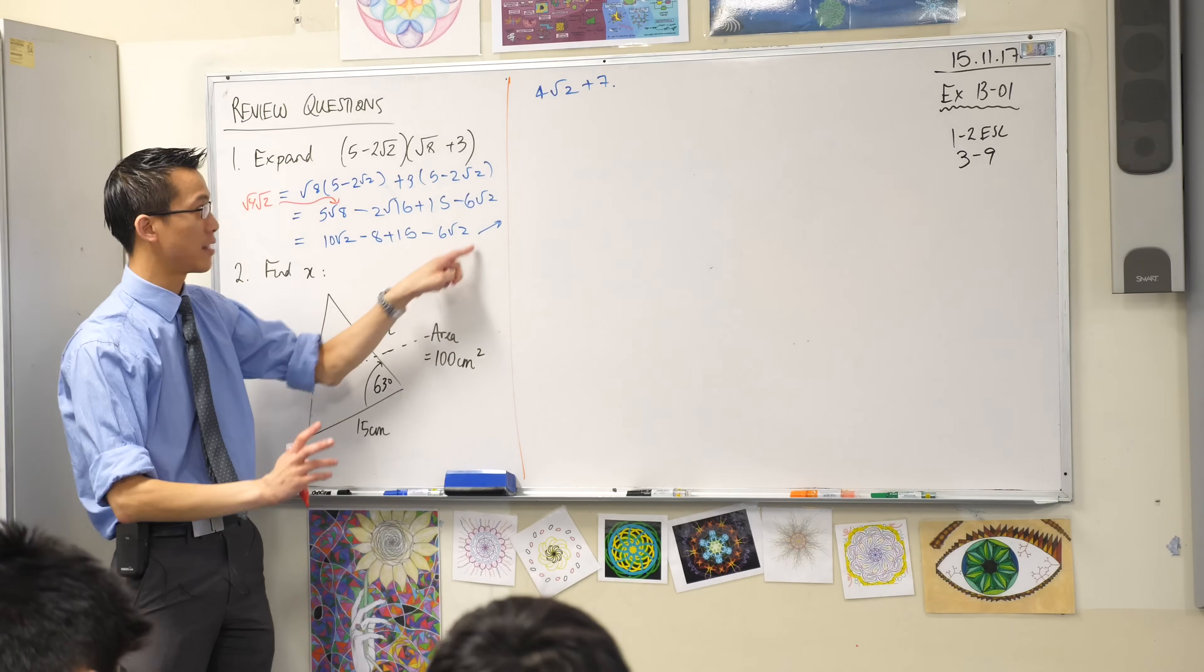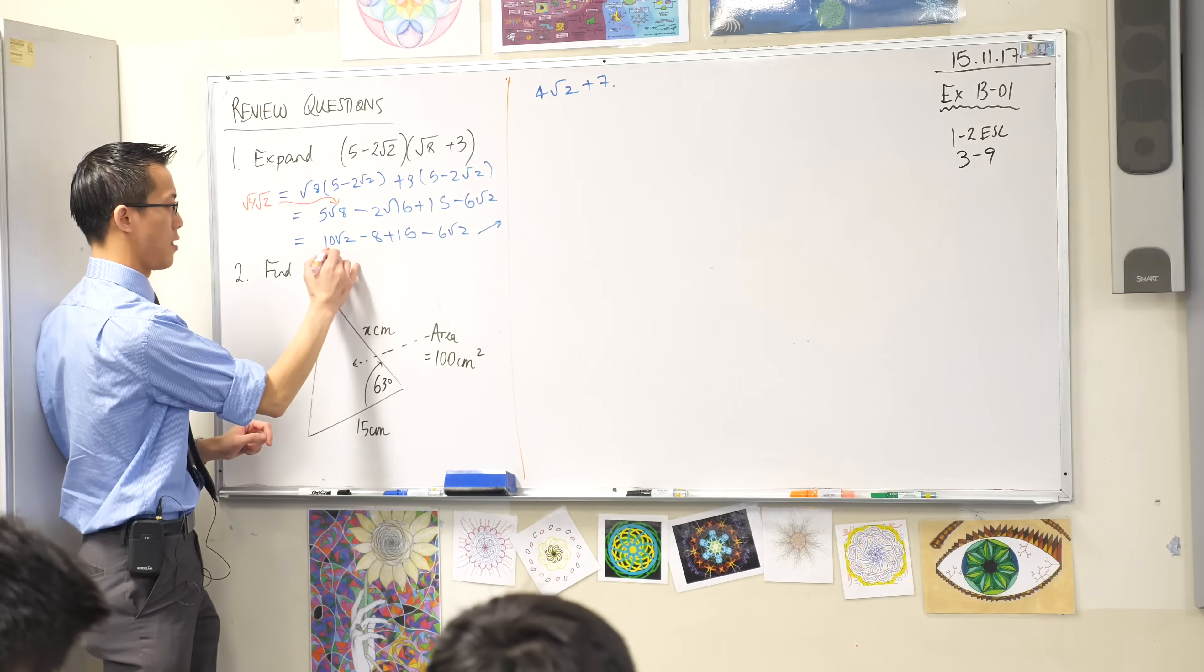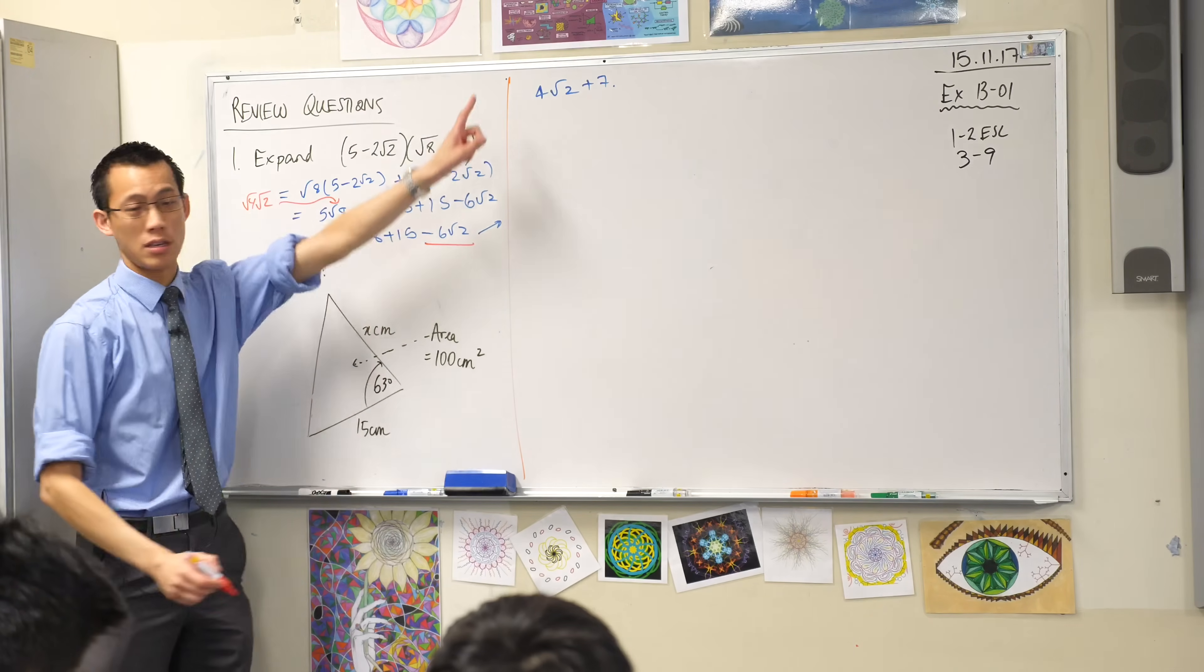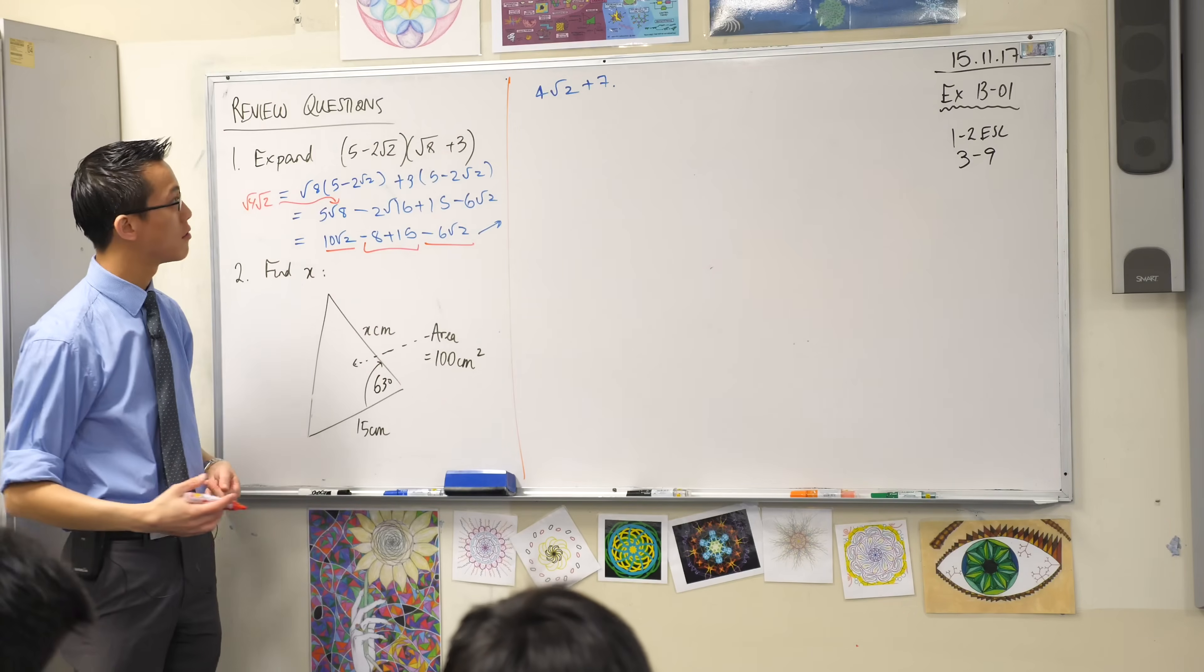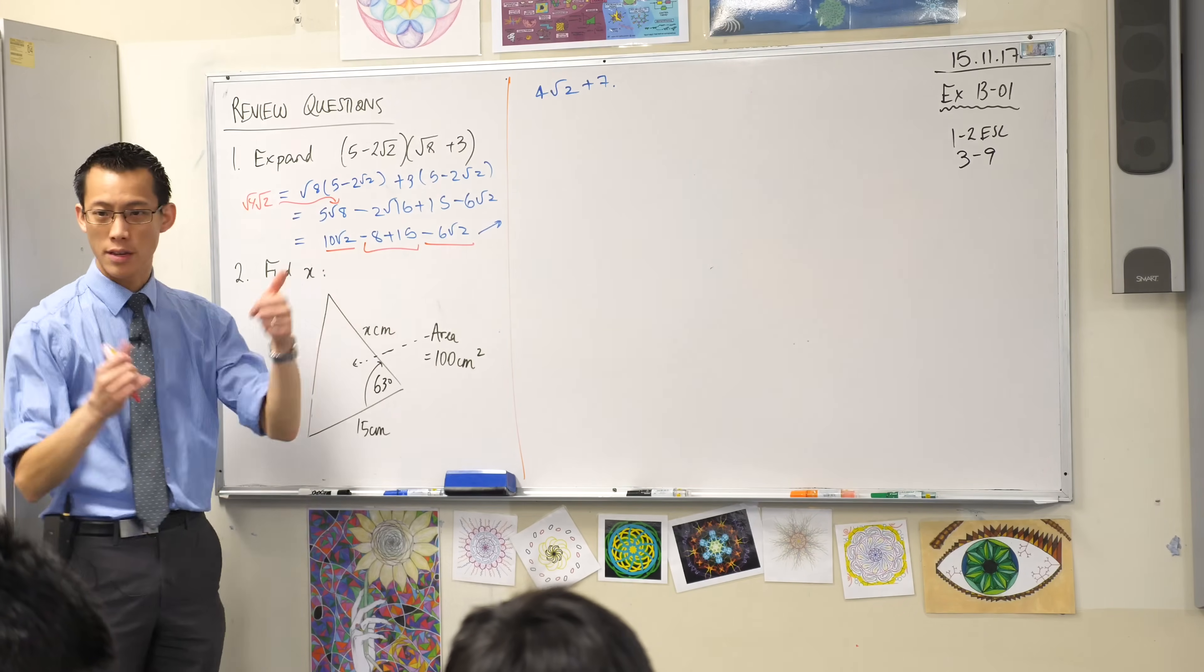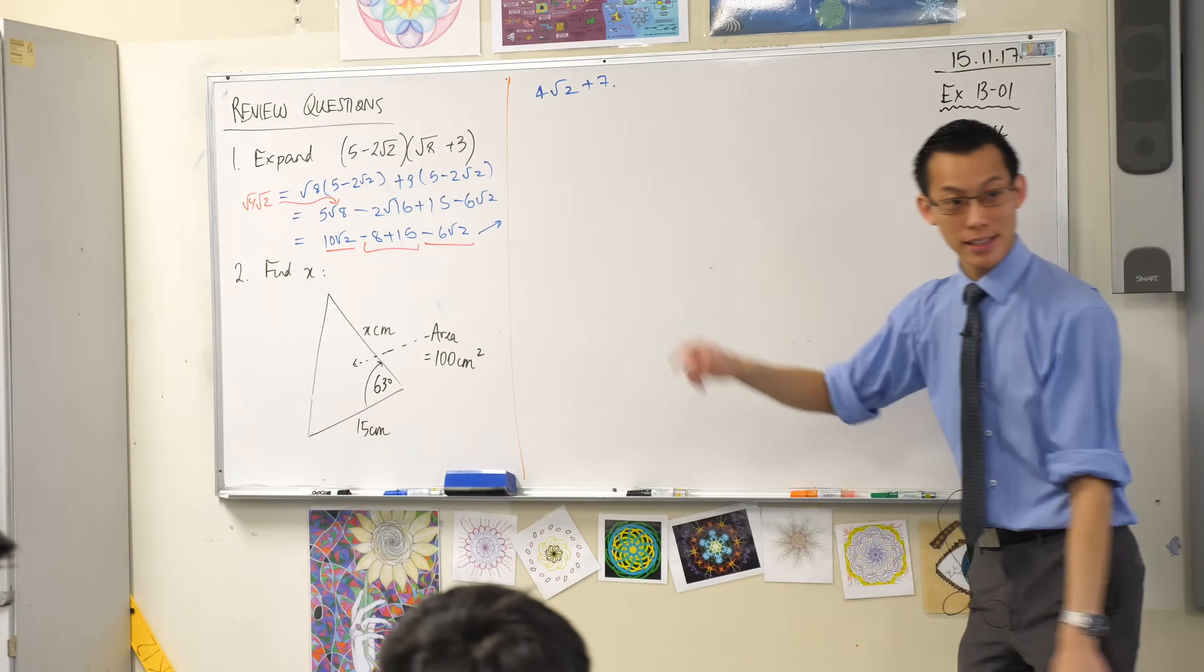And now we're finally in a position where everything is expanded out, we just need to, what's it called again to get from here to here, collect like terms. There's the root 2's, there's four of them, there's the whole numbers, the rational numbers, 7 looks good, great job.